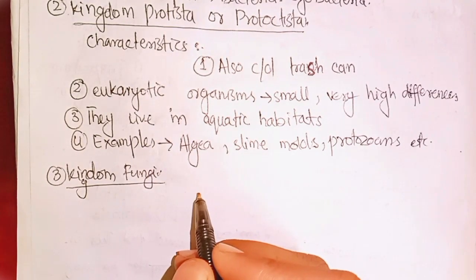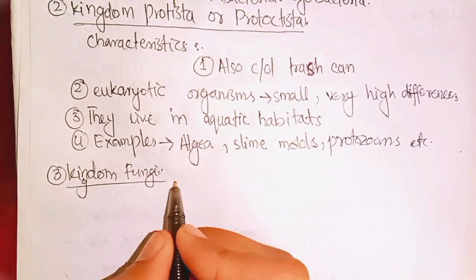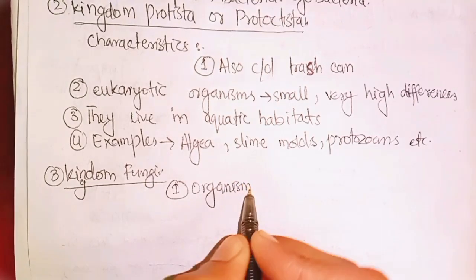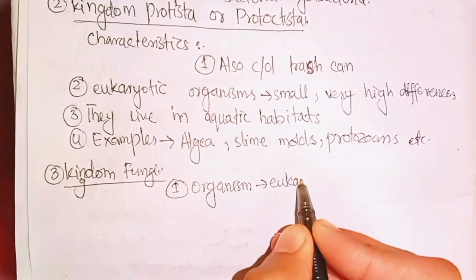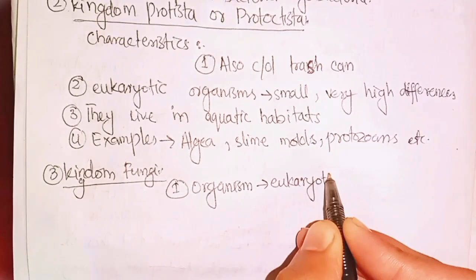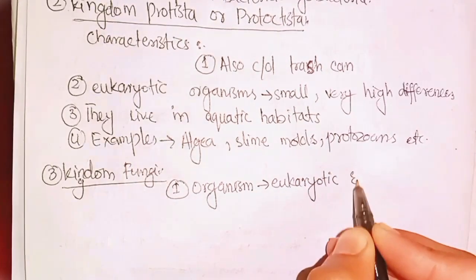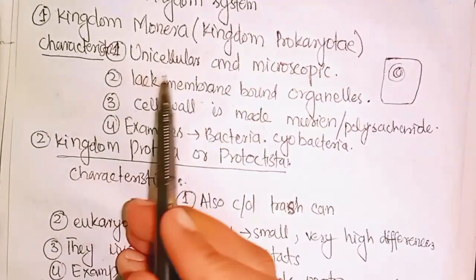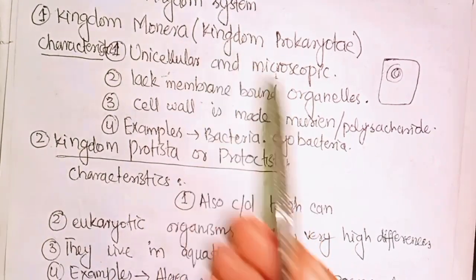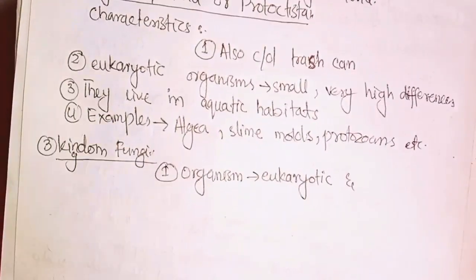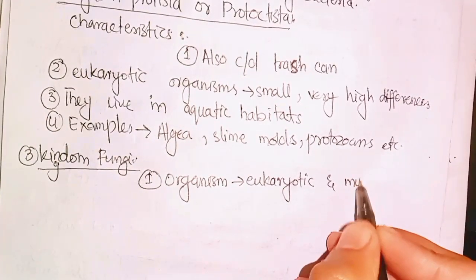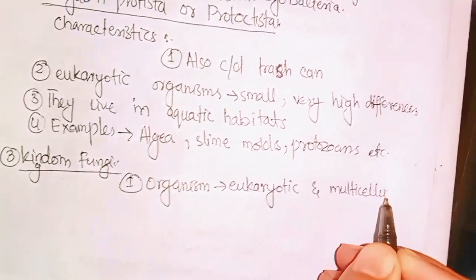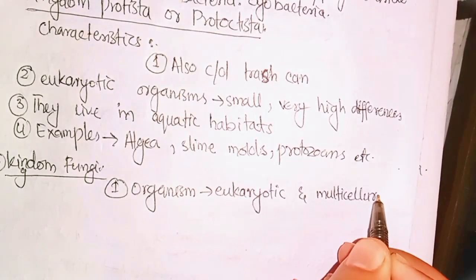Now, Kingdom Fungi. Fungi are eukaryotic organisms. They can be unicellular or multicellular. Unlike Kingdom Monera, which is unicellular and microscopic, Kingdom Fungi are eukaryotic and can be multicellular.